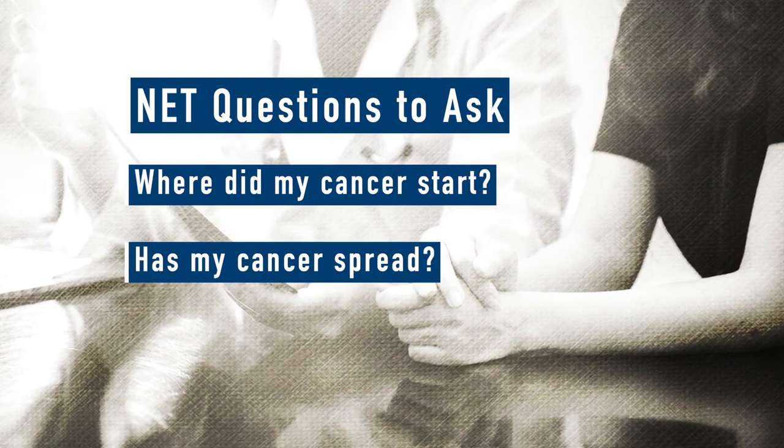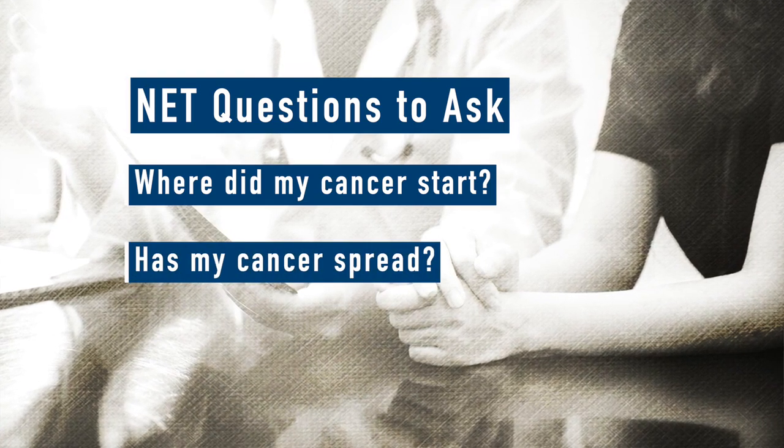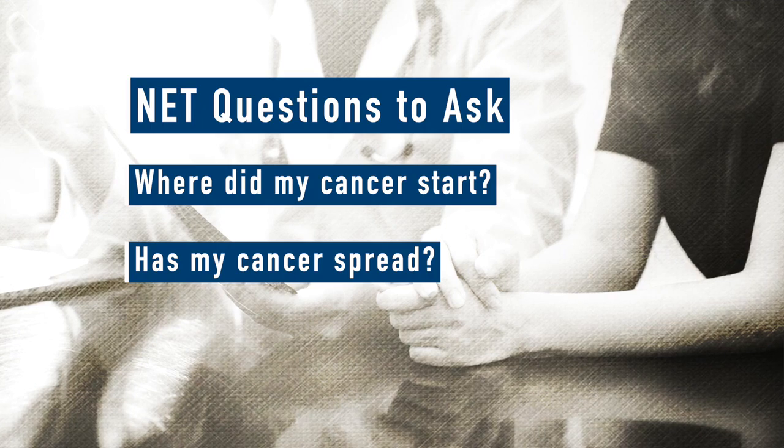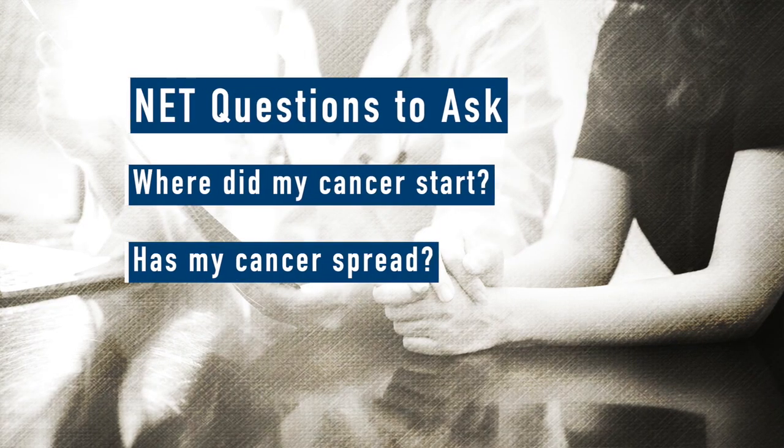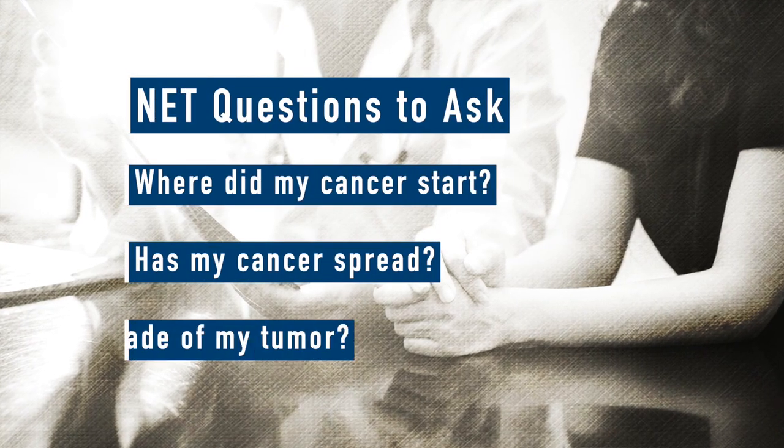The second question would be: is my cancer localized, or has it spread? That will also affect the treatments. For example, if the cancer is localized to the pancreas, surgery could be considered. If it has spread to the liver or the lungs, the treatments need to be more systemic.